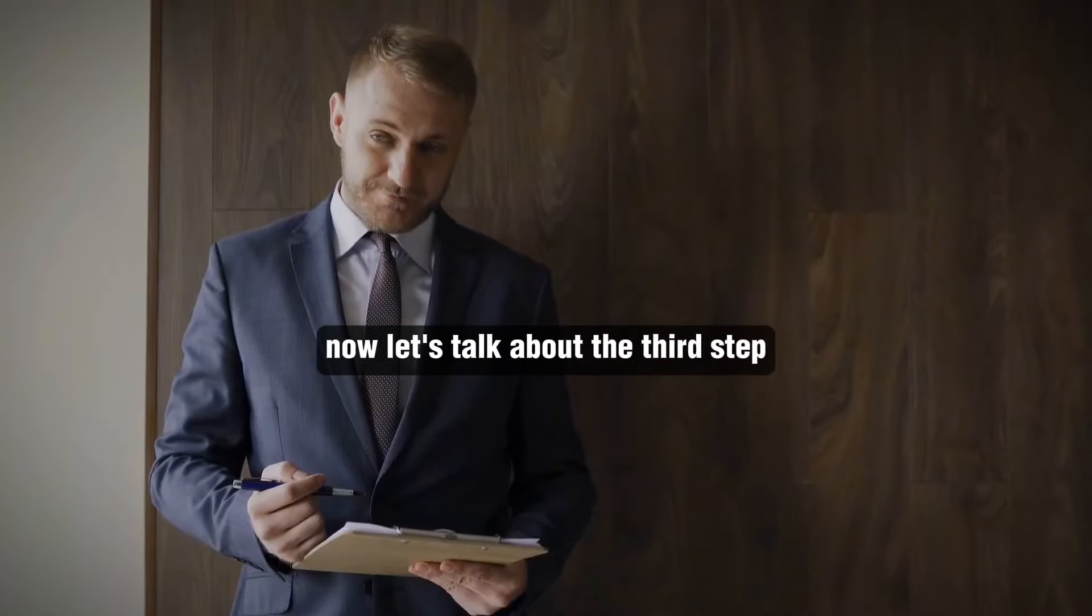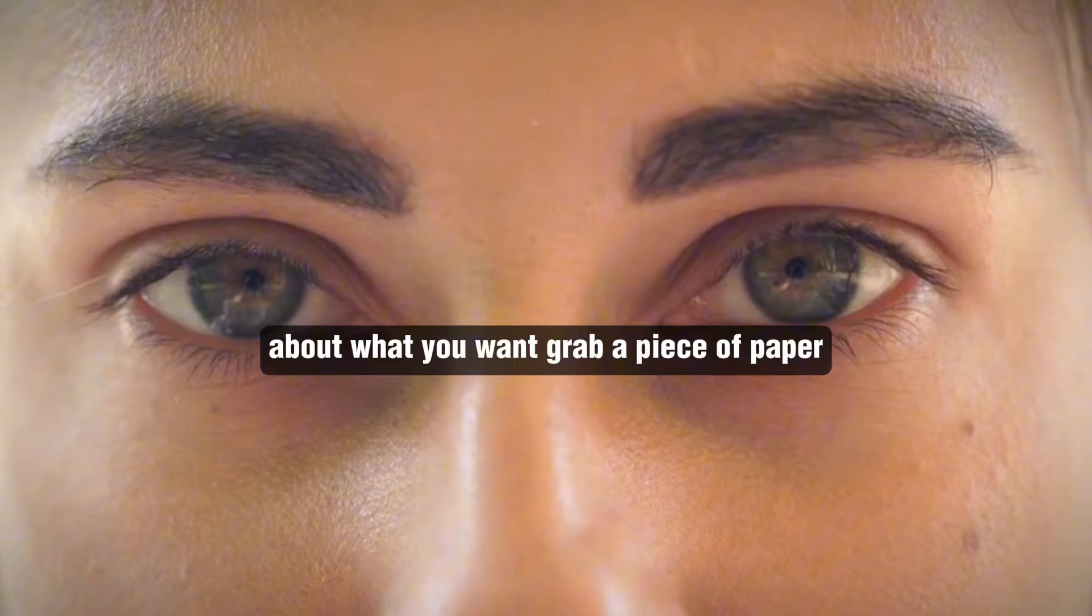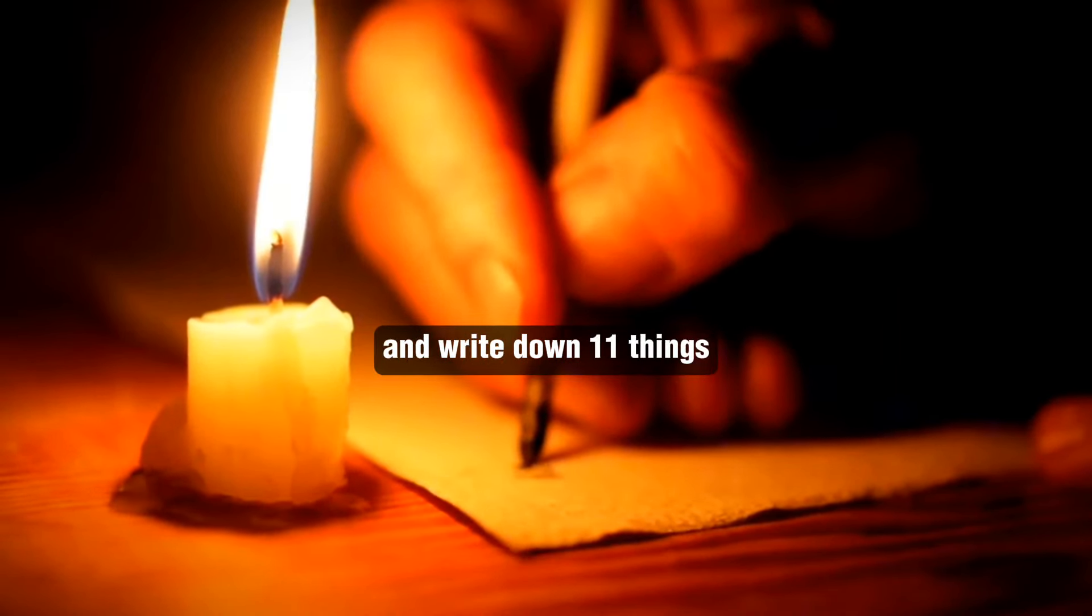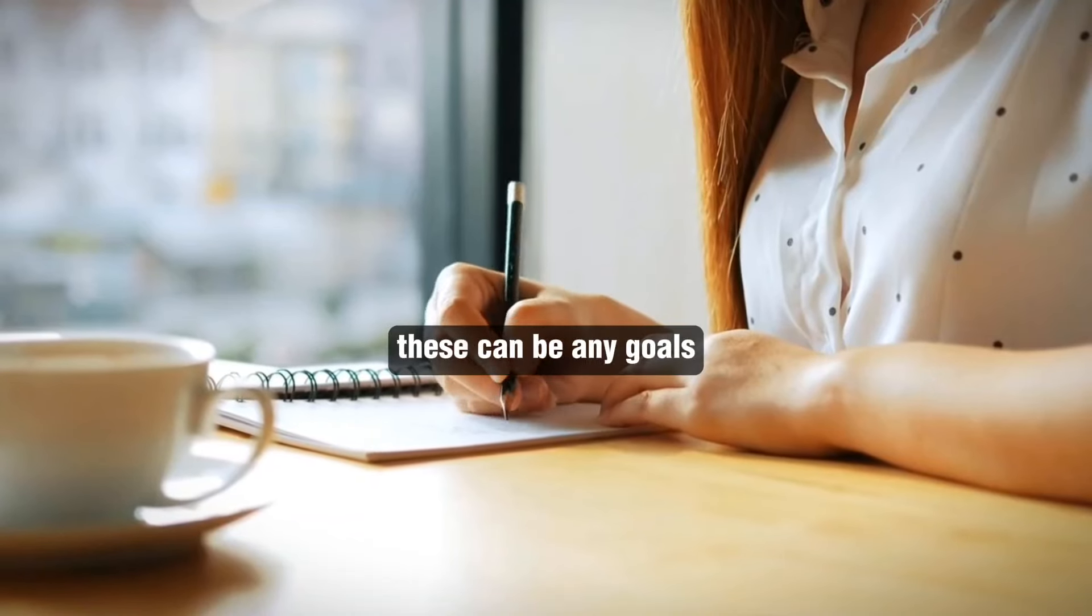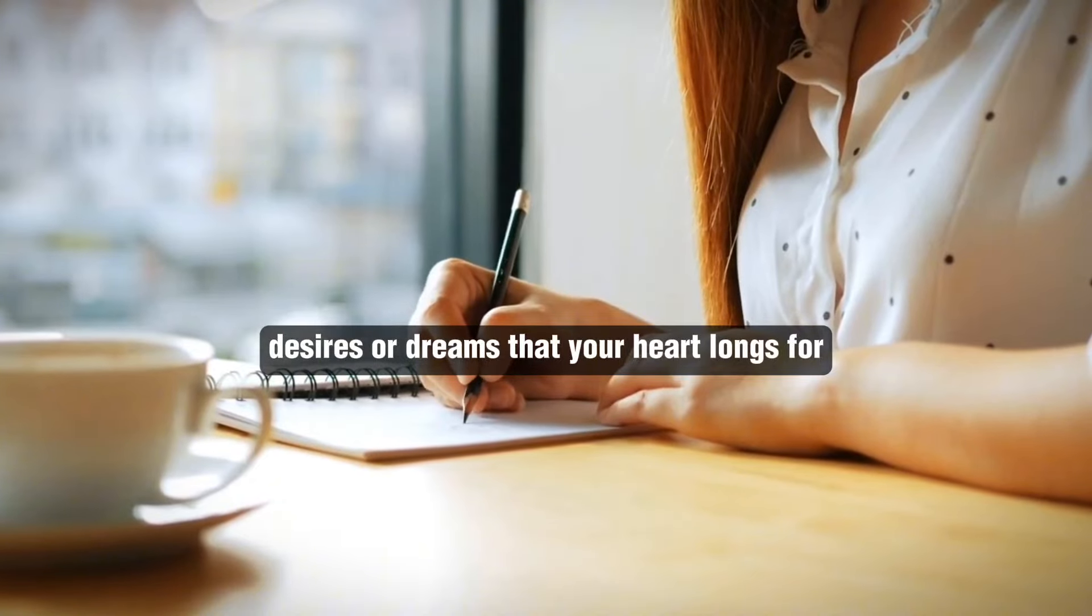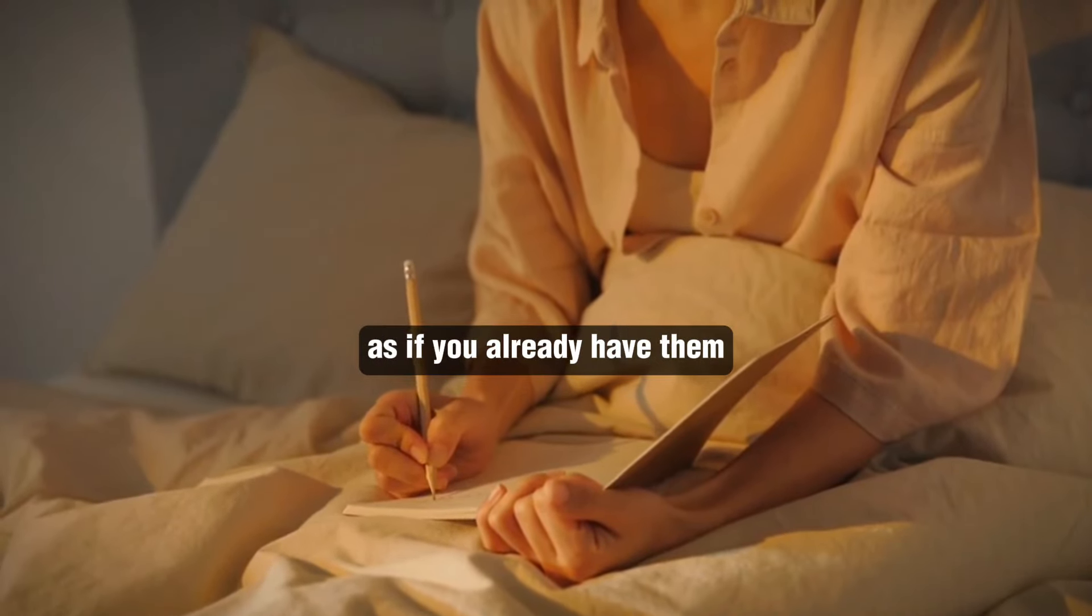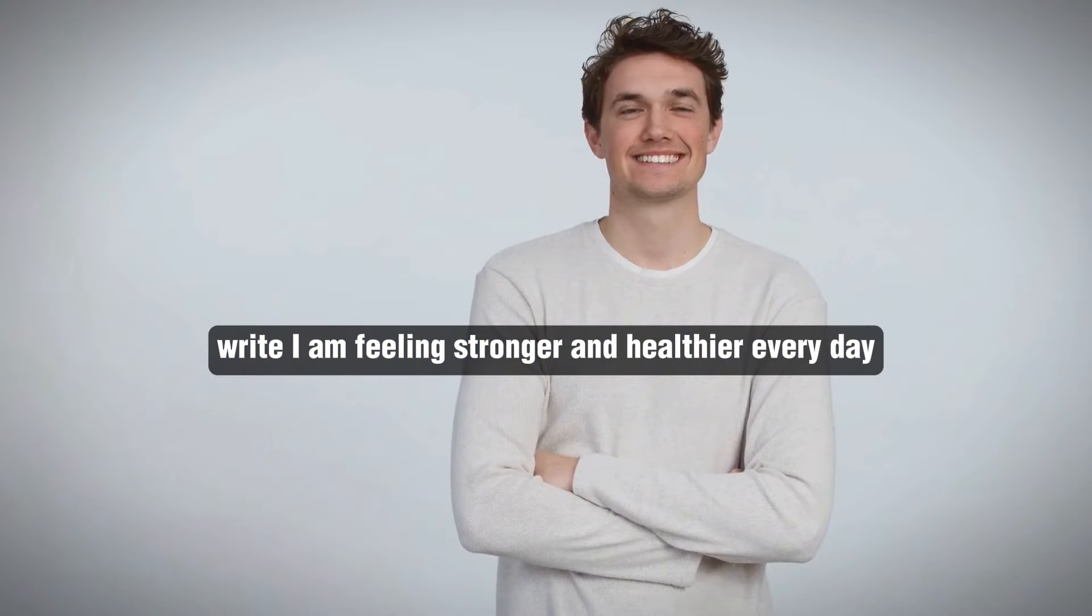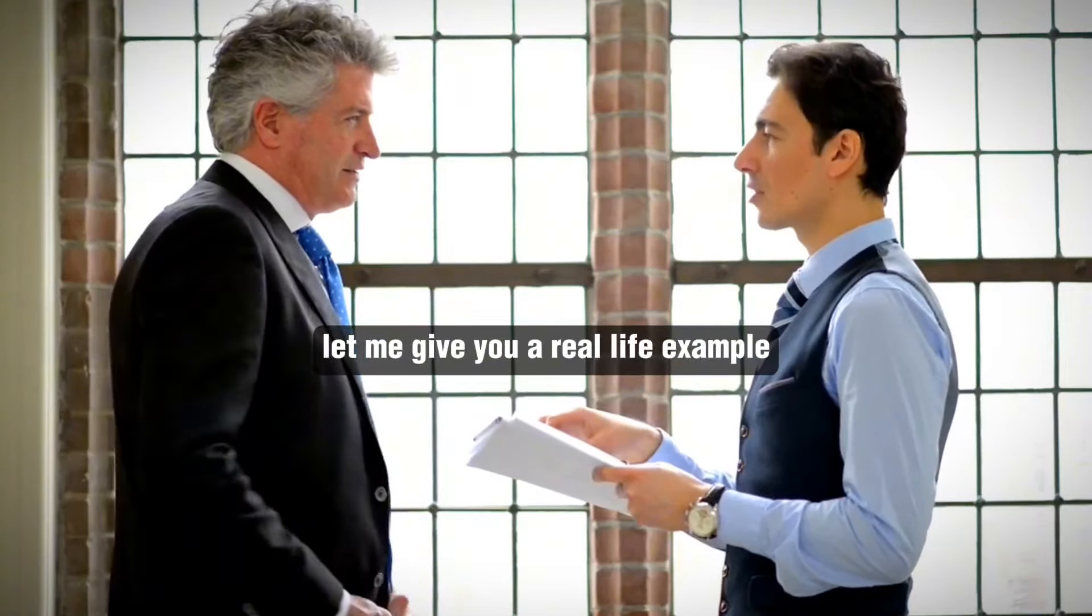Alright, now let's talk about the third step. This is where you get to be super specific about what you want. Grab a piece of paper and write down 11 things you truly wish to manifest in the next 11 months. These can be any goals, desires, or dreams that your heart longs for. What's important here is to write them as if you already have them. Instead of saying, I want to be in better shape, write, I am feeling stronger and healthier every day.